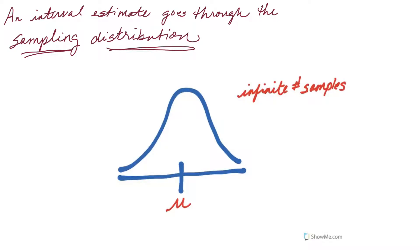What we learned about the sampling distribution last time is that it's normal, it's symmetrical, the center of the distribution is always equal to the population parameter, and the distance, or the spread, is measured by the standard error. Sampling distribution is based on this idea that if we take an infinite number of samples and then calculate the mean and plot all those means, this is what we would end up with.